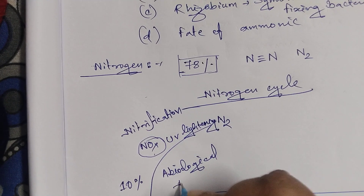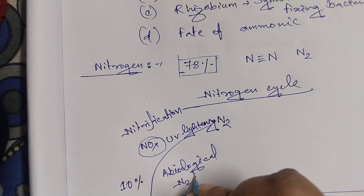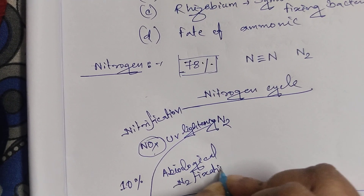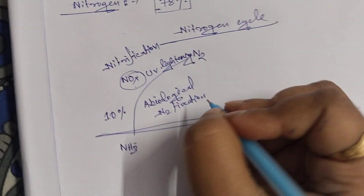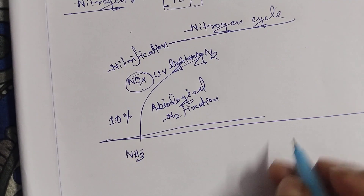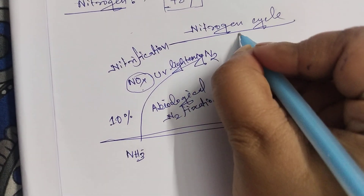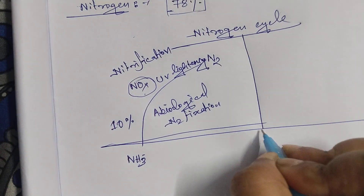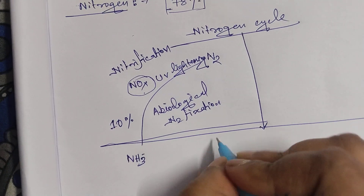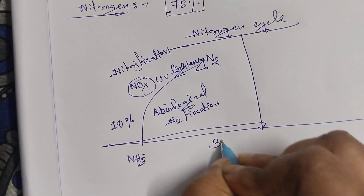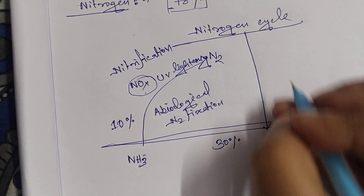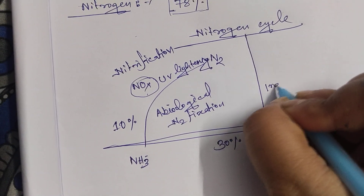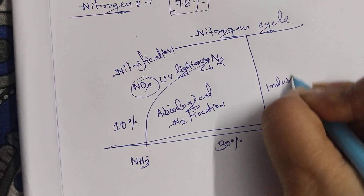Approximately 10 percent of nitrogen fixation takes place by the industrial process. This is called industrial nitrogen fixation.